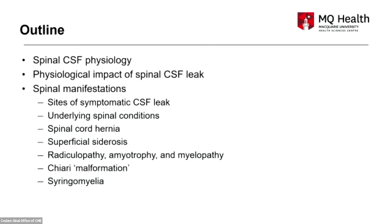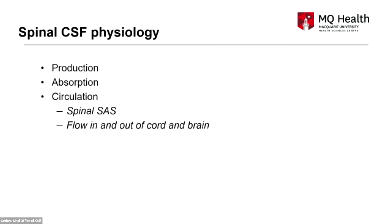I'm going to cover spinal CSF physiology, then go through what I think might be the physiological impact of CSF leak on that physiology, and then some of the manifestations of CSF leak in the spine. Spinal CSF physiology is really a subset of CSF physiology overall, which involves production, absorption, circulation, and flow in and out of the parenchyma.